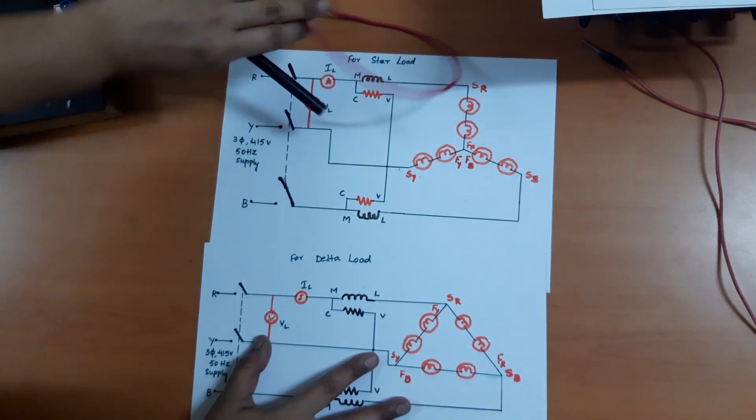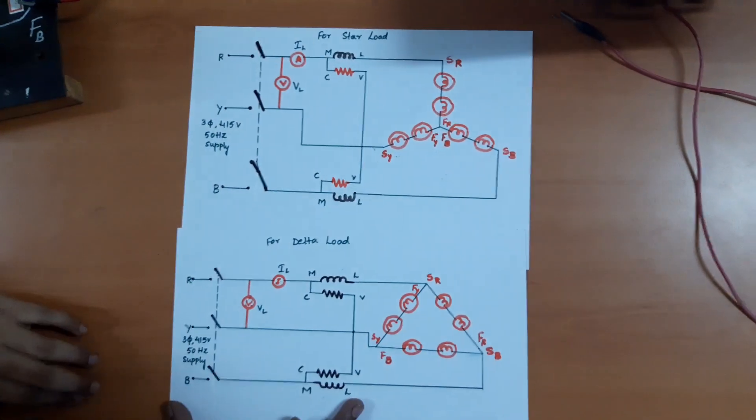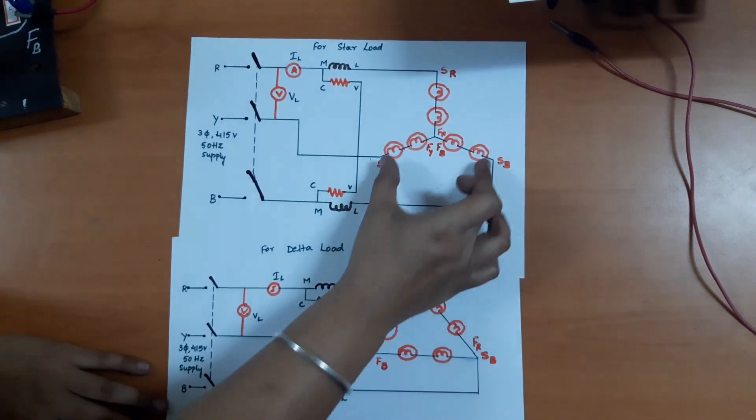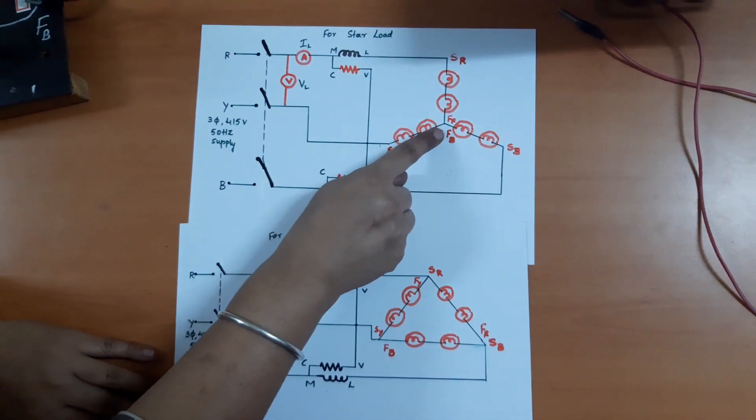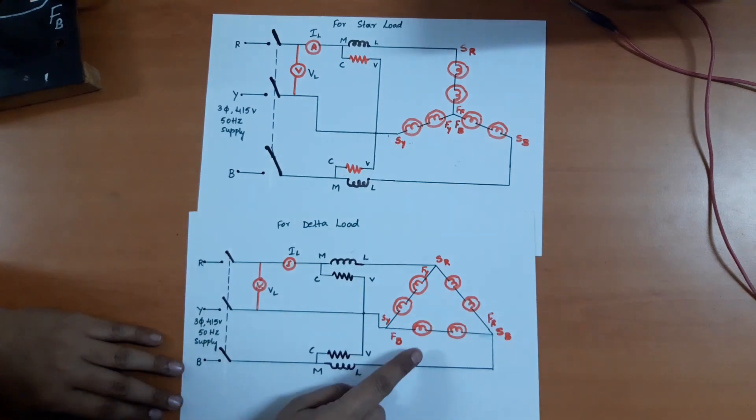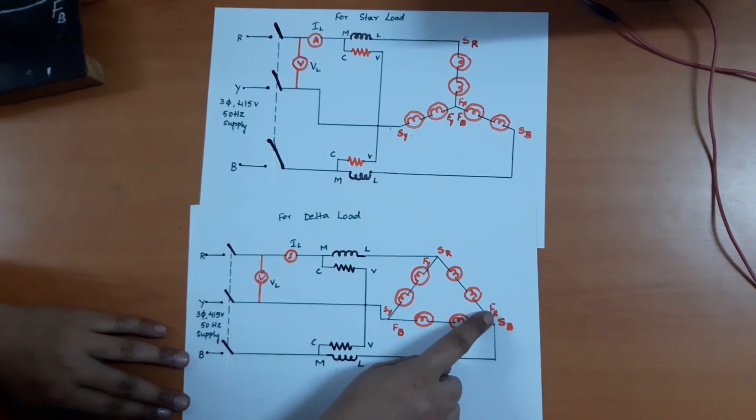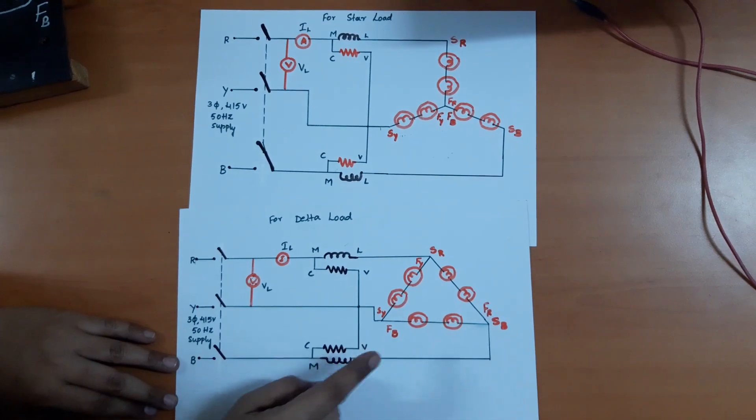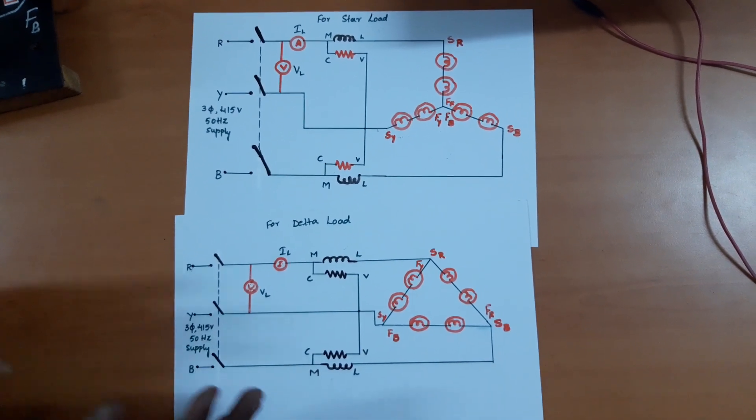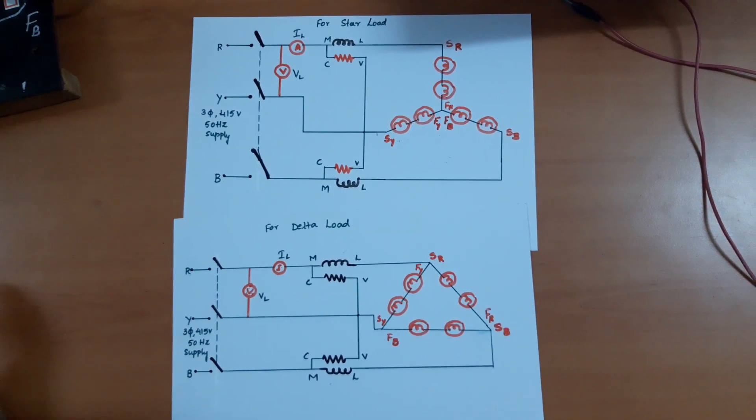This part of the circuit is the same, only in this region you will find the difference. In star connected load, all the similar points meet at a point, whereas in delta connected load, the dissimilar points meet at a junction. Let us now connect the delta connection and further connect it to the existing circuit.